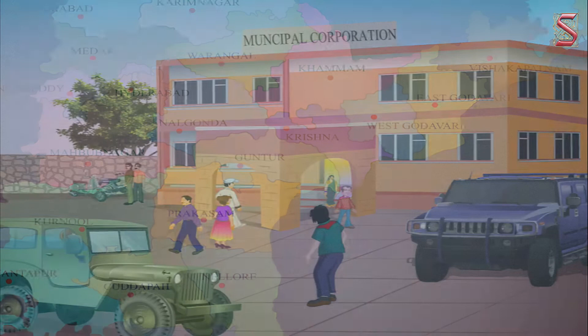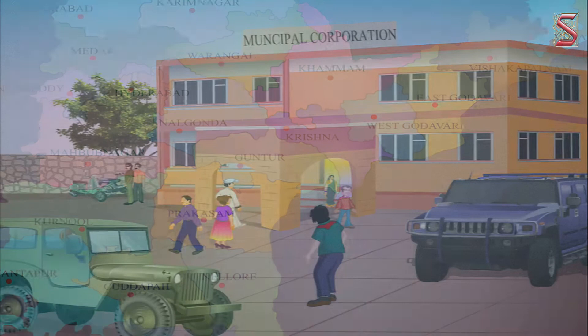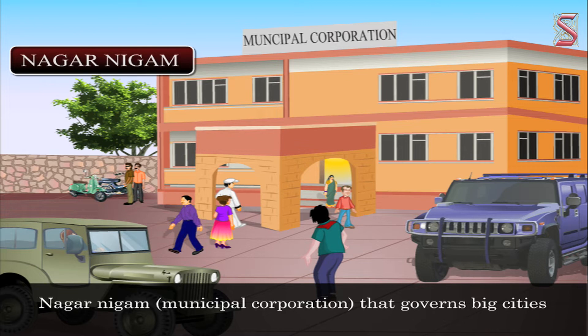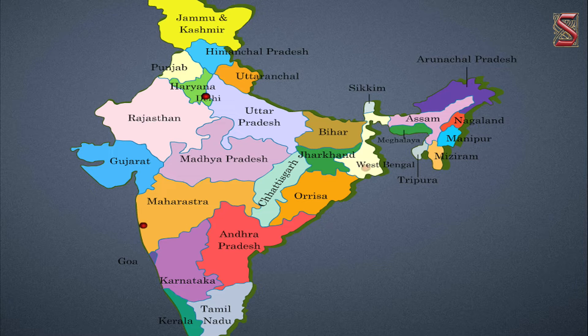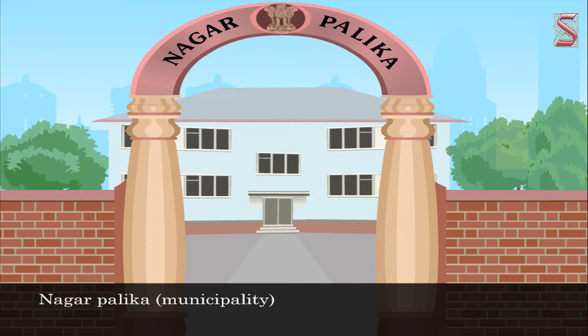Today we have three categories of urban local bodies. First, Nagar Nigam or Municipal Corporation, which governs big cities with more than 300,000 people. The largest corporations are in the four metropolitan cities of India: Delhi, Mumbai, Kolkata, and Chennai.